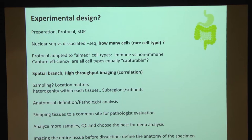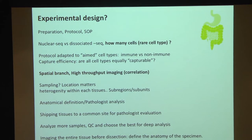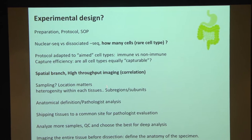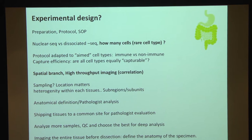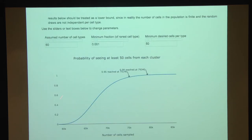The second part of the discussion was on experimental design, preparation, protocols, and SOPs — specifically nuclear sequencing versus dissociated single-cell sequencing, and the estimation of how many cells we need.